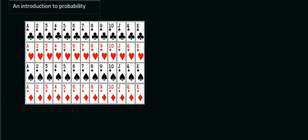In grade 10, they like to ask card questions as well, so you must make sure you know your different cards. In total there are 52 cards in a deck — not counting the jokers. We've got hearts, diamonds, clubs, and spades. In each of the four categories there are 13 cards going from the ace all the way to the king — so 13 hearts, 13 spades, and 13 diamonds. Notice that half of the cards are black and half of them are red.